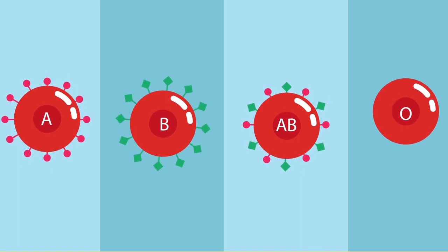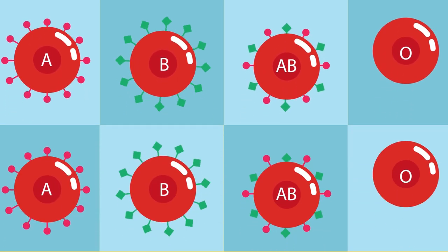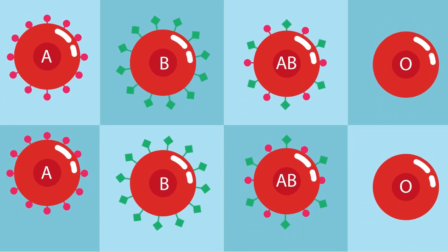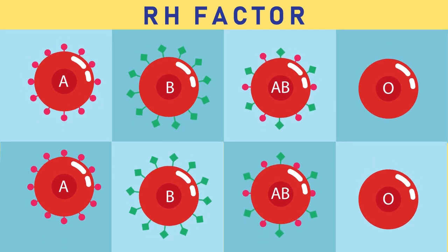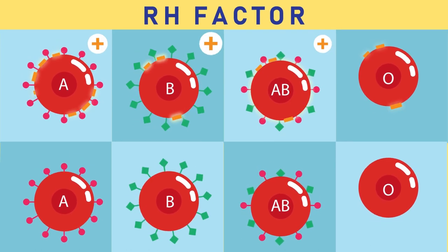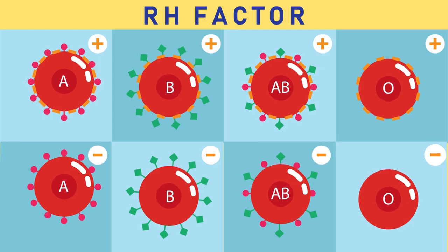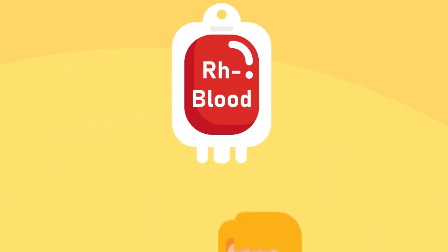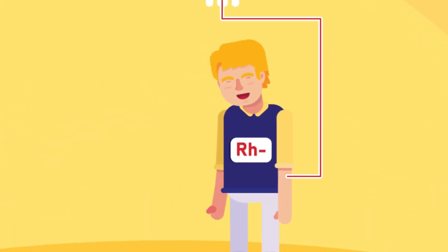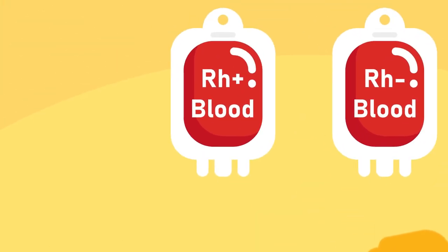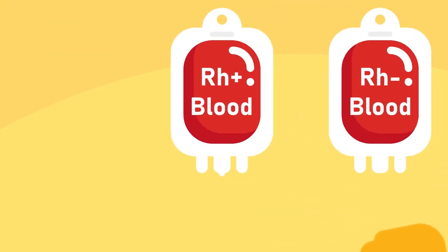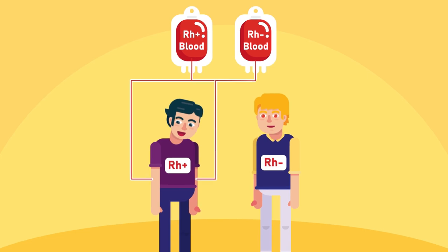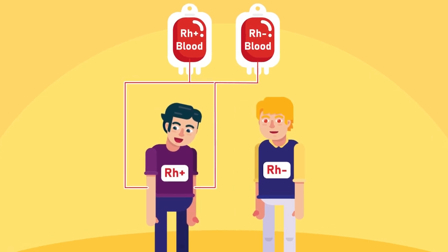The next important factor is known as the Rh factor, which can be either present (positive) or absent (negative). In general, Rh negative blood is given to Rh negative patients, and Rh positive blood or Rh negative blood may be given to Rh positive patients.